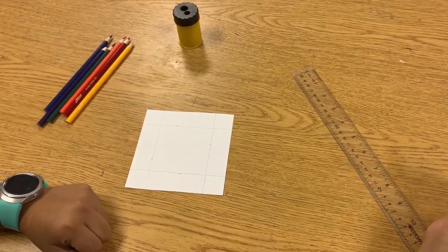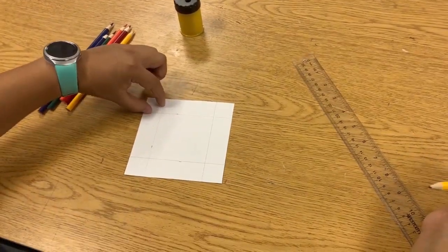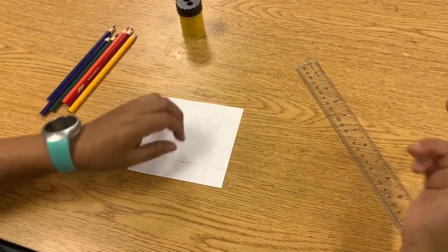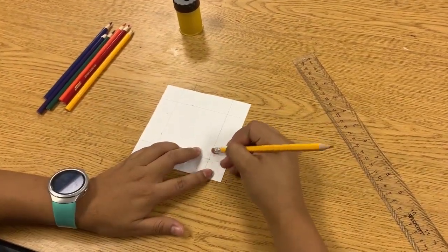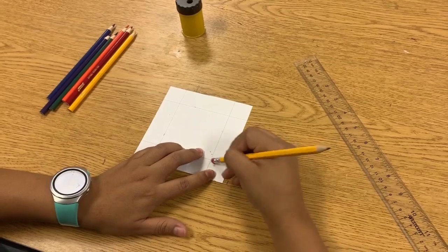Now once you get to this point, you want to erase the lines that are in the corners so that way you end up with a square on the inside of your paper.